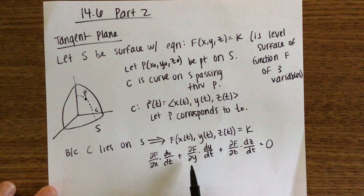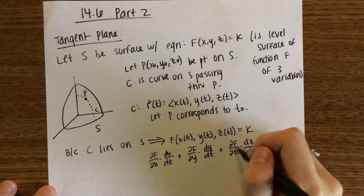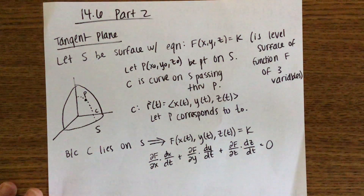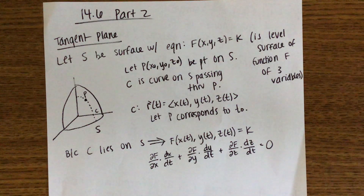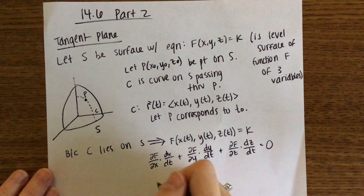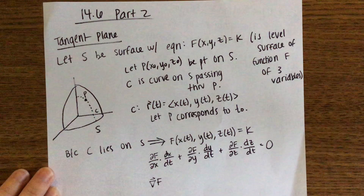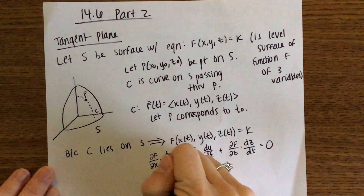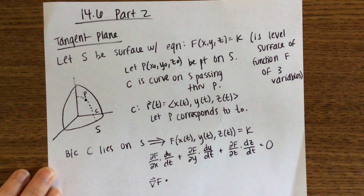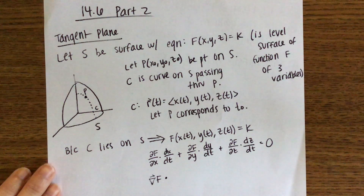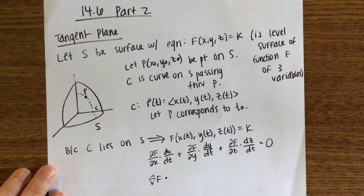The partial of F with respect to x, partial of F with respect to y, and partial of F with respect to z — that's the gradient, which we named yesterday. So another way to write this: it's the gradient of F, dotted with the vector dx/dt, dy/dt, dz/dt — which is r-prime of T — all equal to zero.